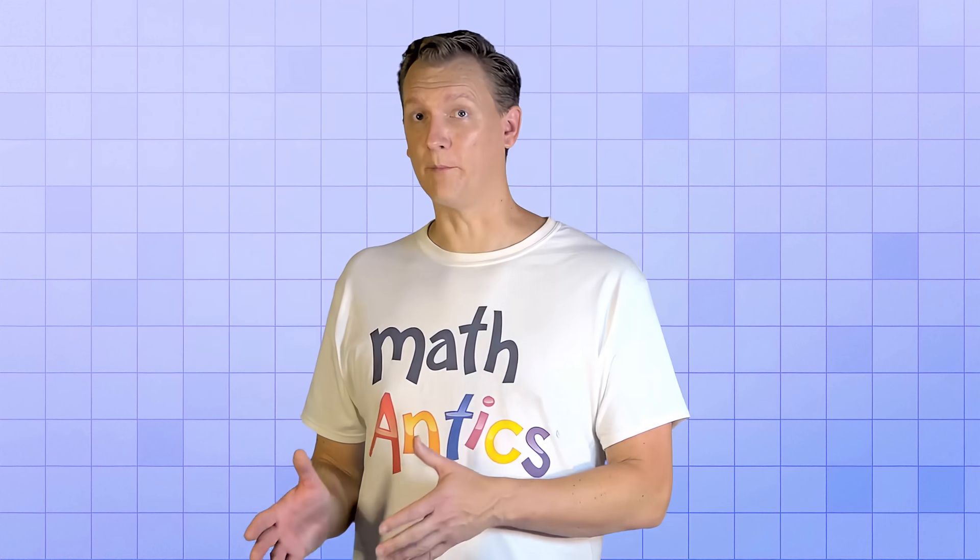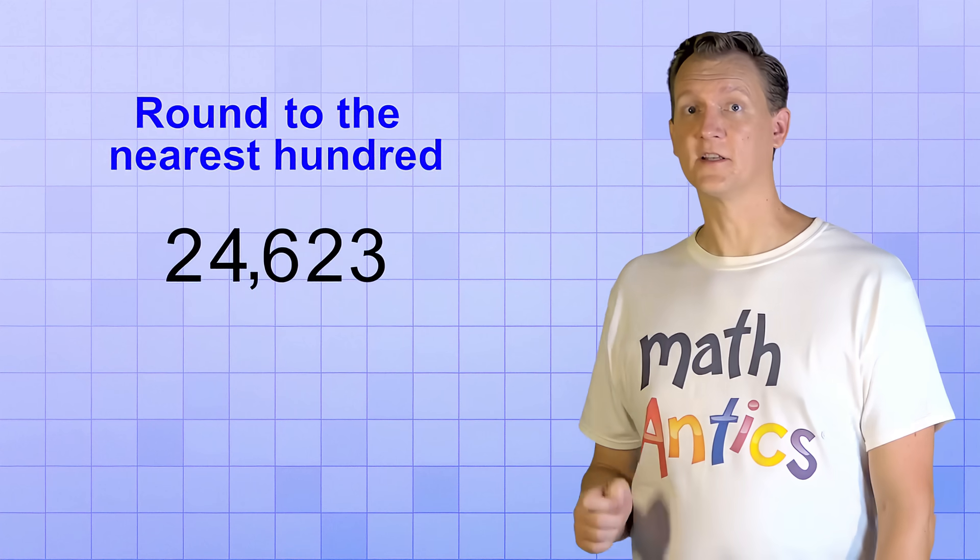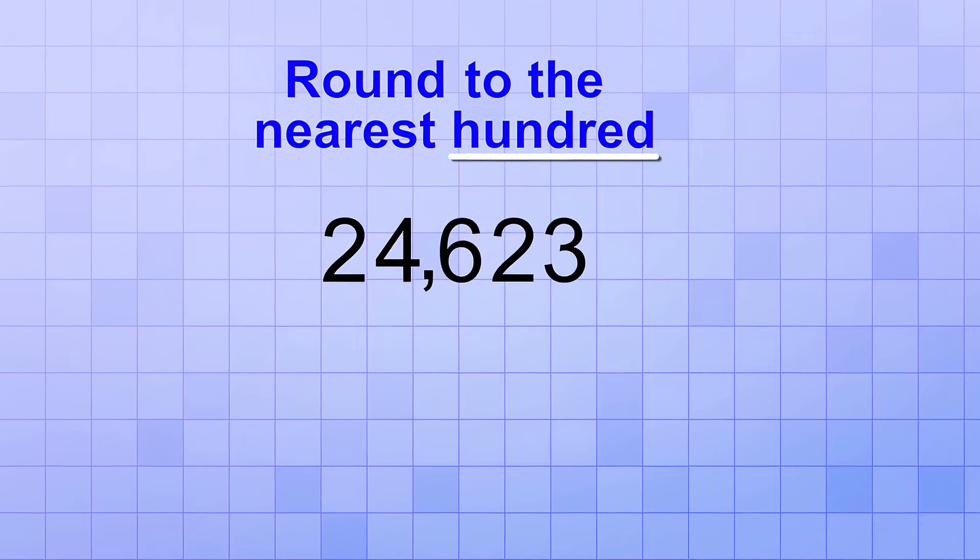Now that you know the basic procedure for rounding numbers, let's try a few specific examples. Here's the first one. Round 24,623 to the nearest hundred. Since we need to round to the nearest hundred, we first need to identify the digit in the hundreds place. That digit is a 6, so that's our target. And we know that any digits to the right of the target will be replaced with zeros in our rounded version.